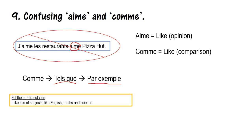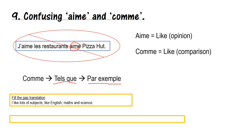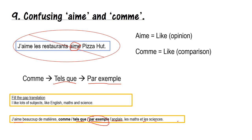Please translate: 'I like lots of different subjects, like English, Maths and Science.' The answer: 'J'aime beaucoup de matières différentes' — we've used j'aime because it's an opinion. Then you can choose to put comme, tel que, or par exemple — 'l'anglais, les maths et les sciences.' Remember that Maths and Science are plural. I would personally use tel que — I think it sounds the most sophisticated.